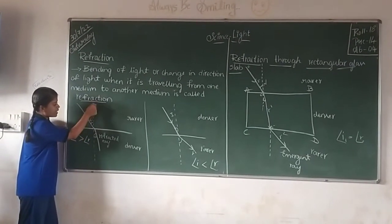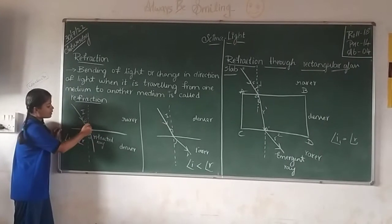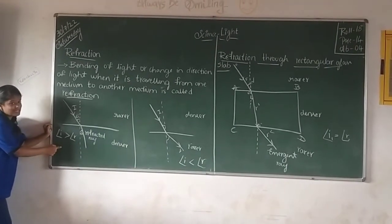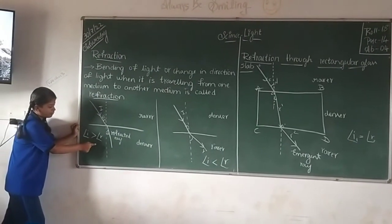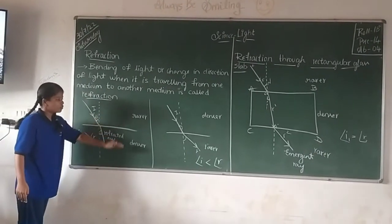So this is the rarer medium and here we have normal, and the refracted wave will come close to the normal. So here the angle of incidence is greater than the angle of refraction. This is in the case where we have rarer to denser.